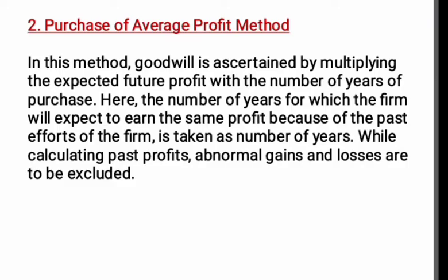The next method is the Purchase of Average Profit Method. In this method, goodwill is ascertained by multiplying the expected future average profit with the number of years of purchase. The number of years represents the period for which the firm expects to earn the same profit based on past efforts of the firm.